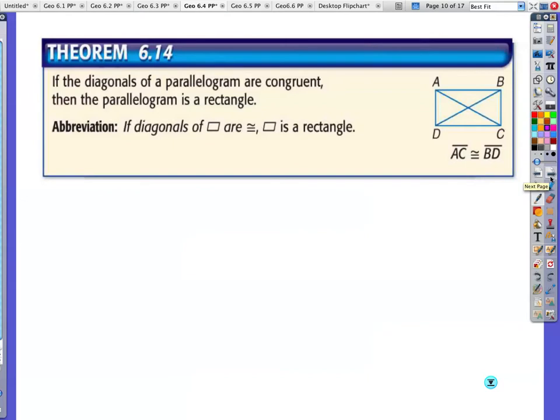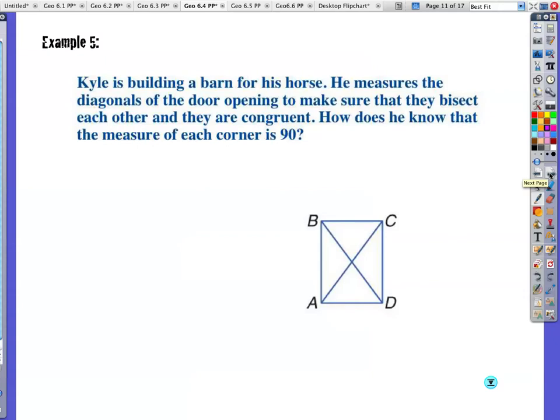If the diagonals of a parallelogram are congruent, then the parallelogram is a rectangle. So this is like the converse, basically, of saying if you have a rectangle and the diagonals are congruent, this is the opposite of that. Kyle is building a barn for his horse. He measures the diagonals of the door opening to make sure that they bisect each other and that they are congruent. So here we have this is going to be congruent to this and they bisect each other. So it's like a parallelogram and it's a rectangle. How does he know that each corner is 90 degrees? Well, if it's going to be a rectangle, then you're going to have this. Once your diagonals are congruent, then you know you have a rectangle. And you have to know it's a parallelogram as well.